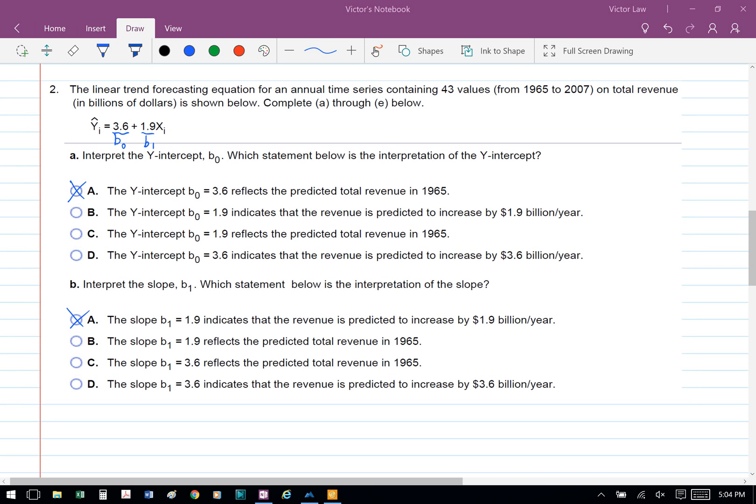In Part A, we're asked to interpret the y-intercept B0, which is 3.6. What that means is that 3.6 is the predicted total revenue in 1965.